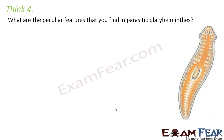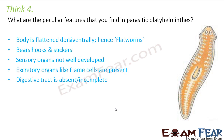What are the peculiar features found in parasitic platyhelminths? The body is flat and dorsiventrally flattened — hence they are flatworms, which is common to all platyhelminths. For parasitic platyhelminths specifically: they stay inside the body of the host and obtain nutrients from them, so they bear hooks and suckers to help in getting their food. Sensory organs are not very well developed. Excretory organs like flame cells are present, with an excretory canal inside which flame cells occur. The digestive tract is absent or incomplete.